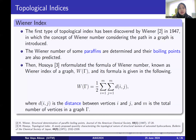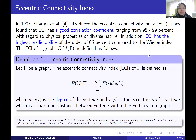The Wiener Index was the first topological index, introduced by Wiener in 1947, with a specific formula. In that research, the Wiener number of some paraffins was determined and their boiling points were predicted. In 1997, Sharma et al. introduced the Eccentric Connectivity Index (ECI), and found that ECI has a good correlation coefficient ranging from 95% to 99% with regard to physical properties of diverse nature. Additionally, ECI has the highest predictability at 86% compared to the Wiener Index. These are the reasons why ECI continues to be widely used.